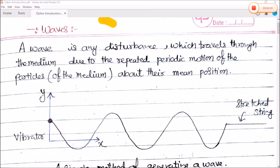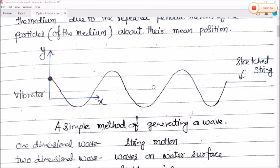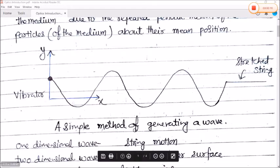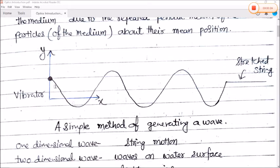So what is a wave? A wave is any disturbance which travels through the medium due to the repeated periodic motion of the particles of the medium about their mean position. It is the simplest method of generating a wave. There is a vibrator which vibrates the stretched string, so this type of sinusoidal waves are produced.